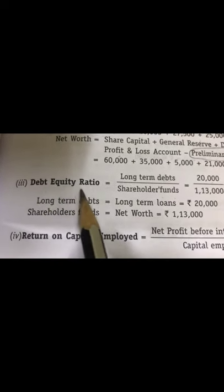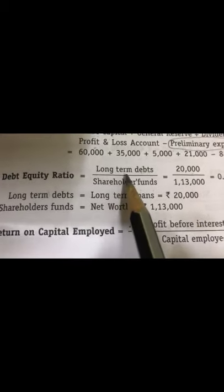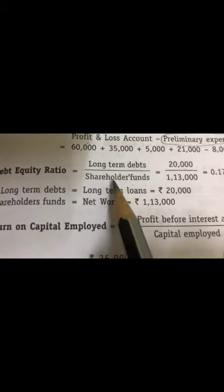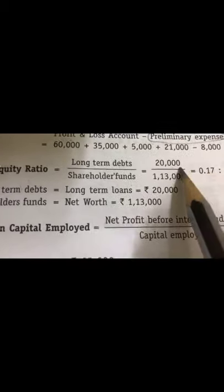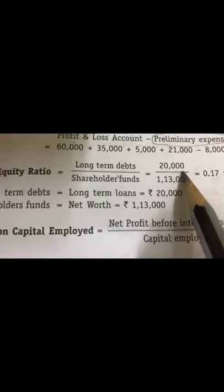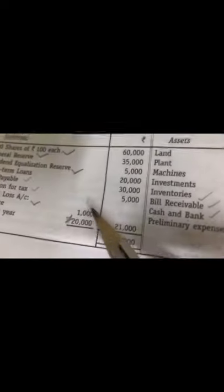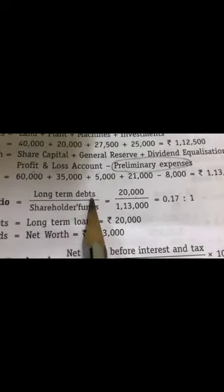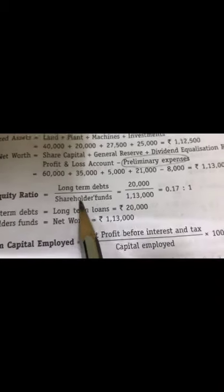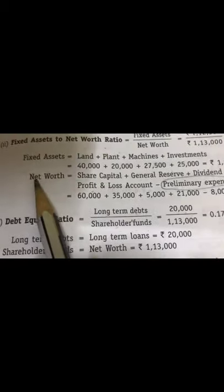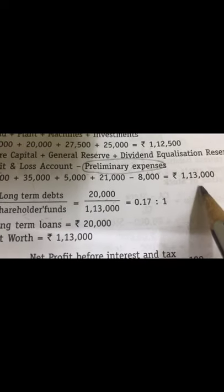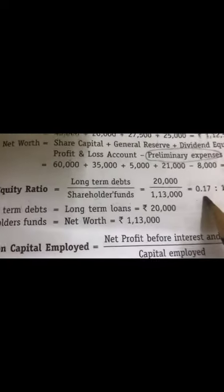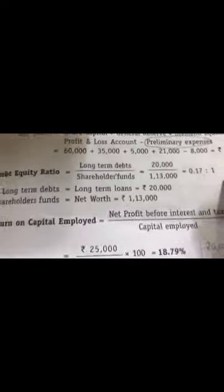Now calculate debt equity ratio. Debt equity ratio equals long-term debts divided by shareholders' funds. In this problem, the only long-term debt is long-term loans of Rs. 20,000. Shareholders' funds, which is net worth, we have already calculated as 1,13,000. So the ratio is 0.17 is to 1.